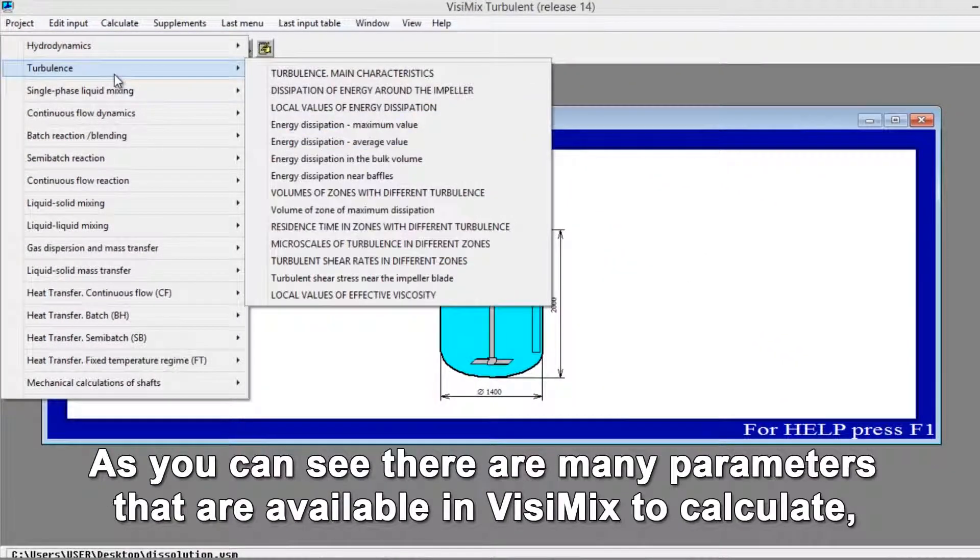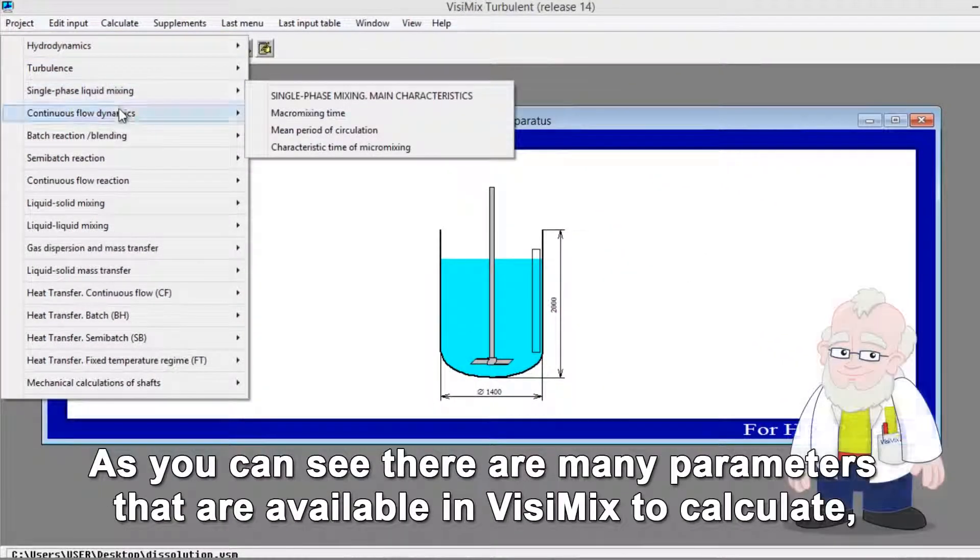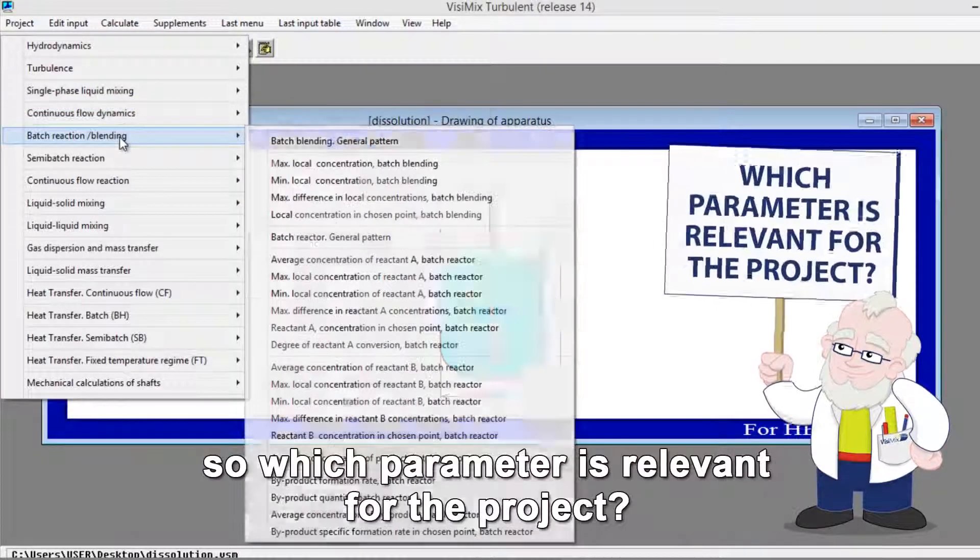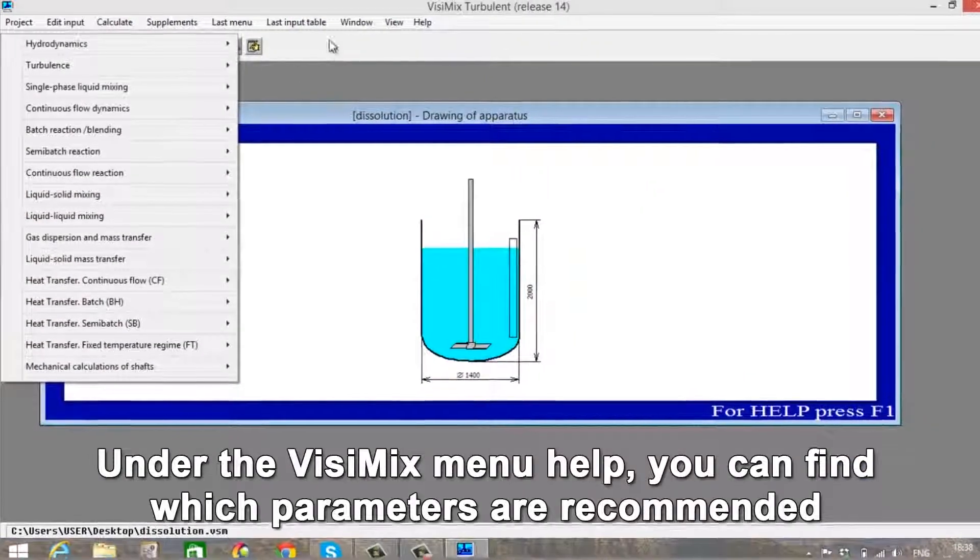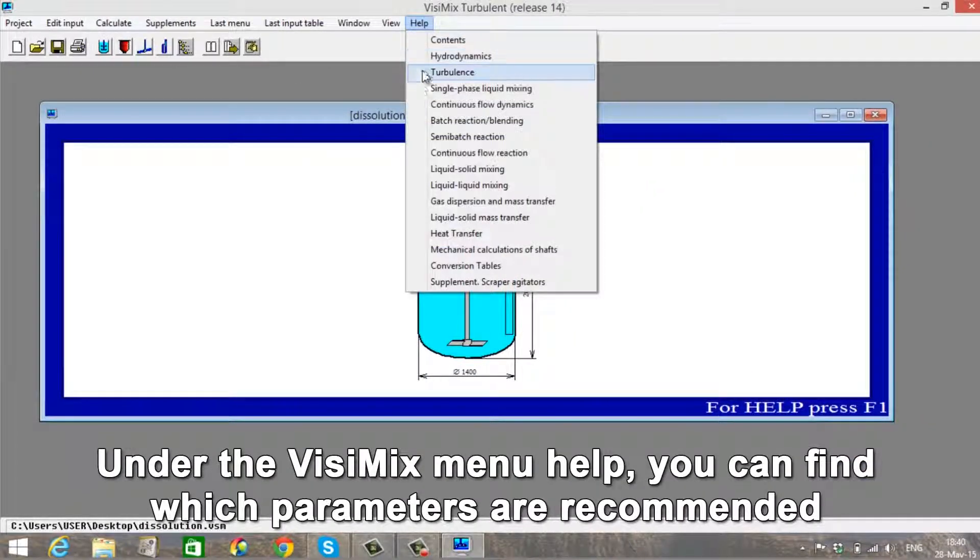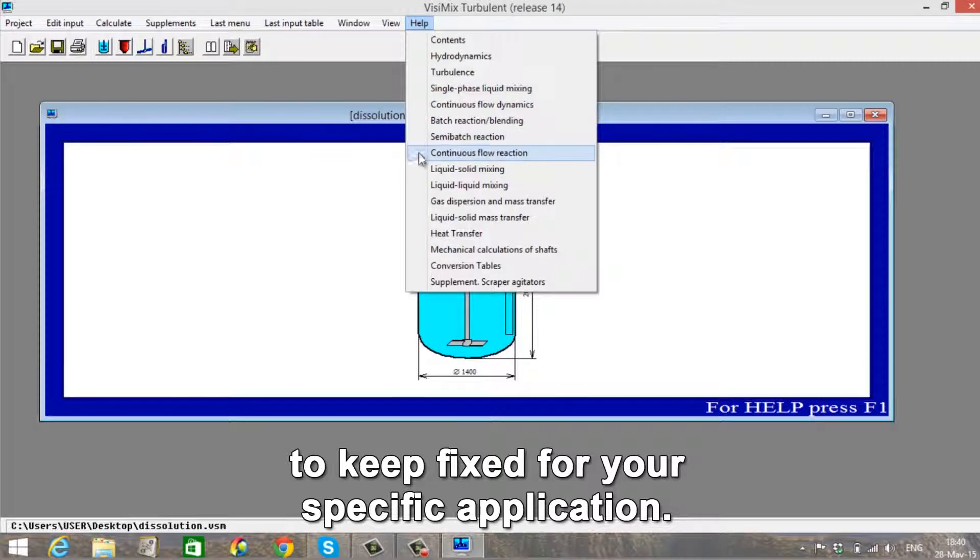As you can see, there are many parameters that are available in Vizimix to calculate, so which parameter is relevant for the project? Under the Vizimix menu help, you can find which parameters are recommended to keep fixed for your specific application.